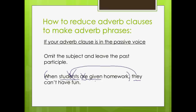Interestingly enough, though, this one is a little tricky, and I picked it out on purpose because — do we know who 'they' is? No, we don't. So in a case like this where we have a pronoun that is referring to another noun in a previous clause, to help the reader really understand who my subject is, it's very helpful if I get rid of 'they' and I write 'students' here when I decide to reduce my adverb clause. Because now I know who 'they' is — oh, okay, they is students. So 'when given homework, students can't have fun.' Now it makes a lot more sense.